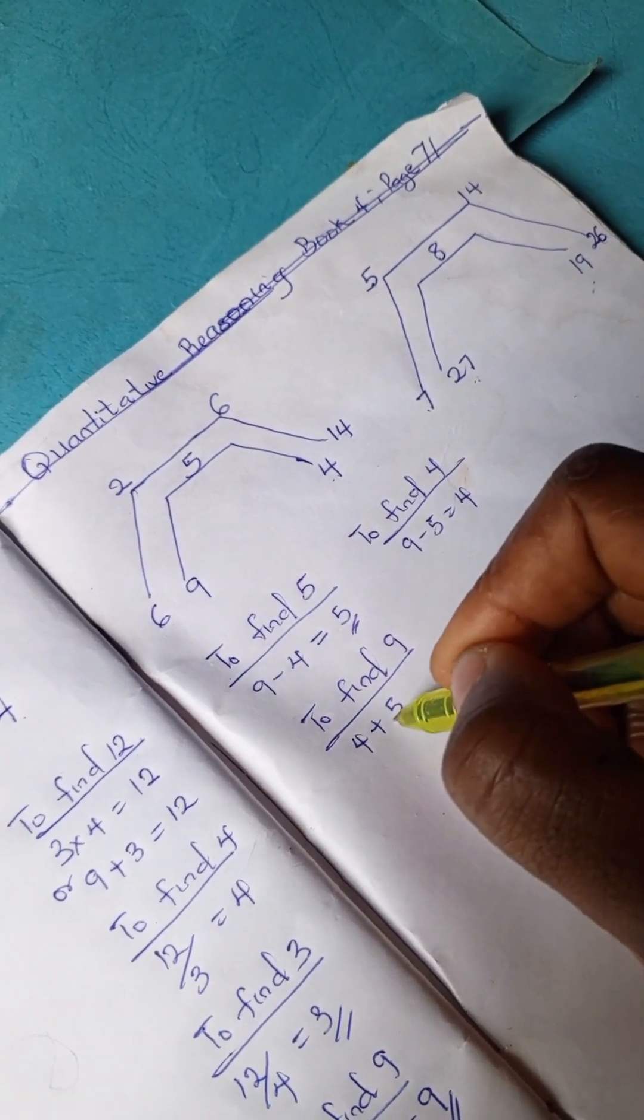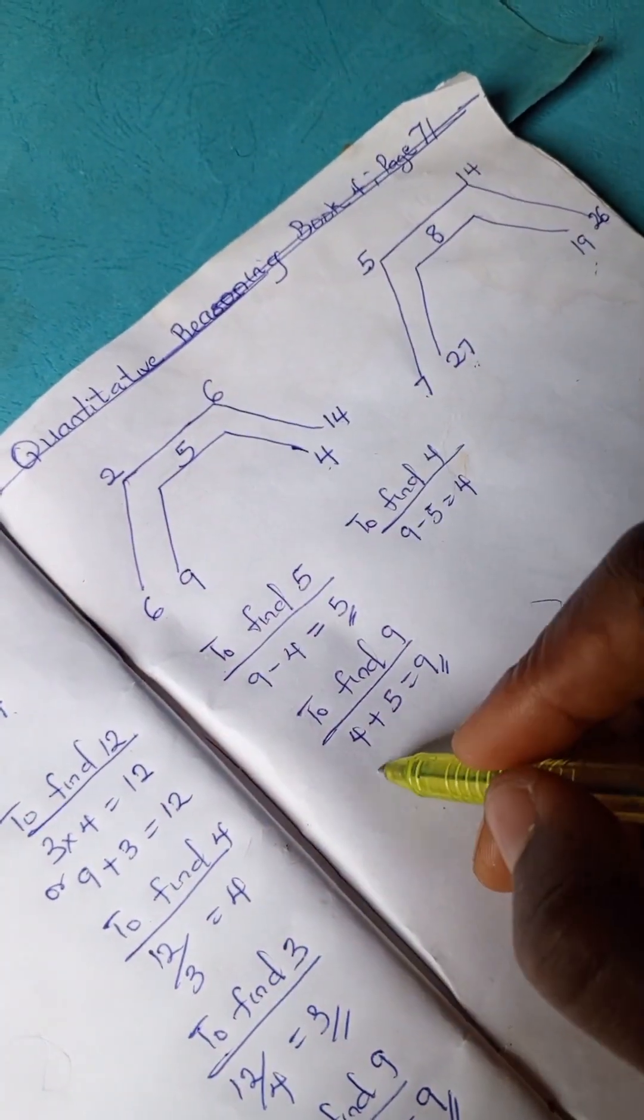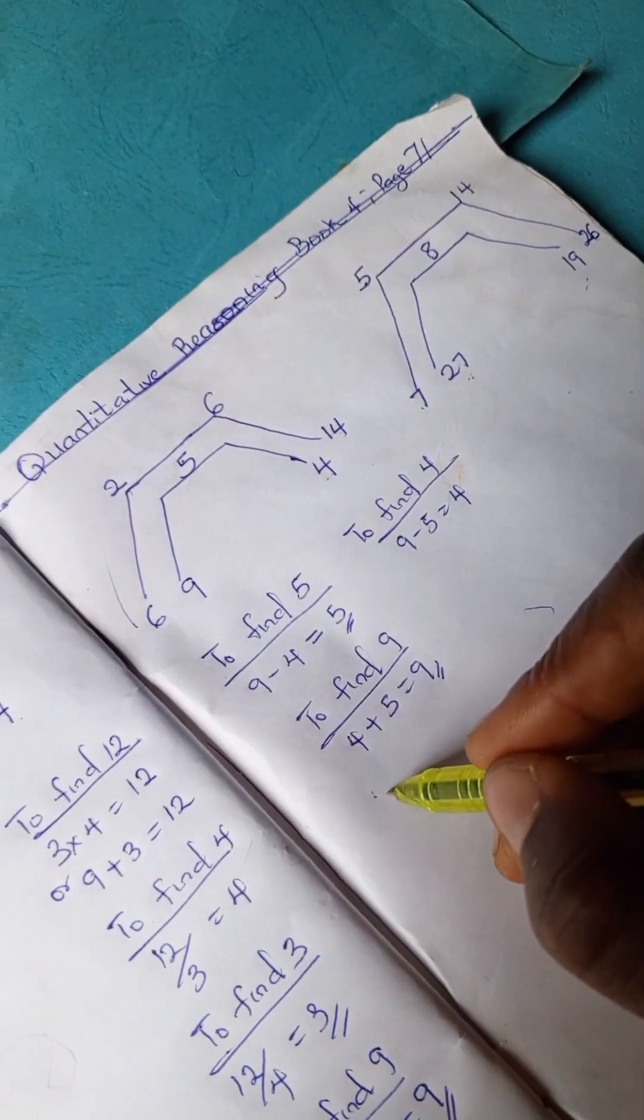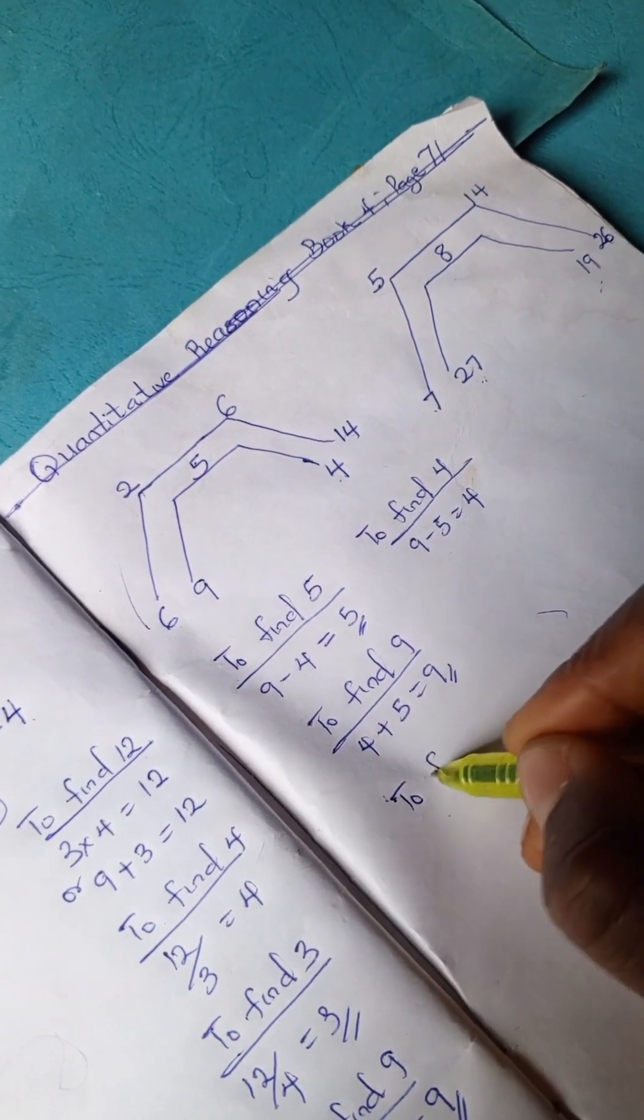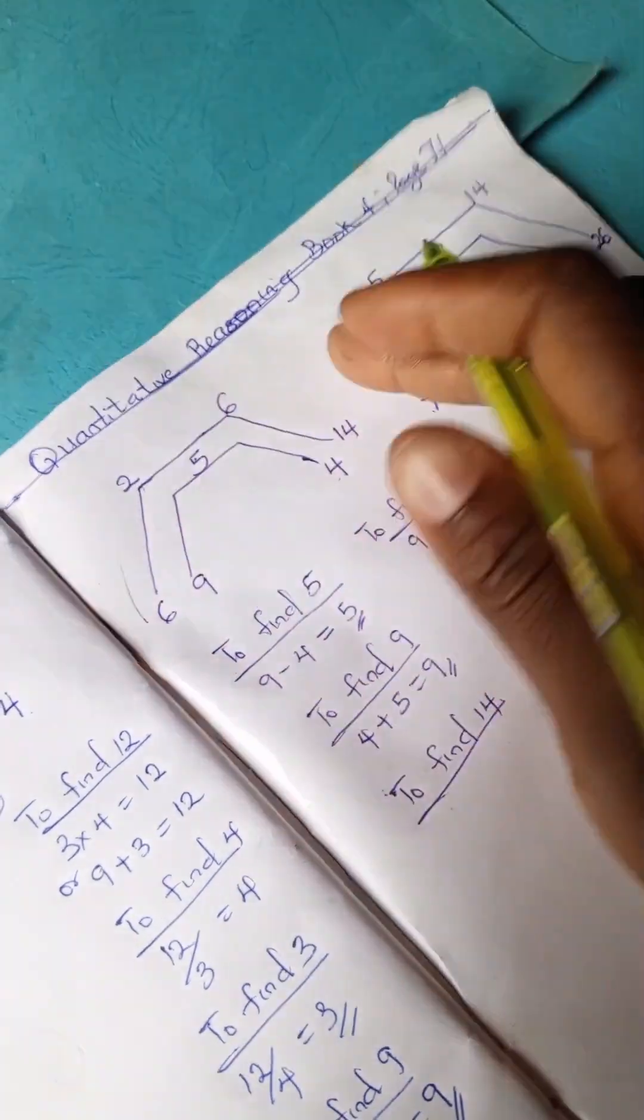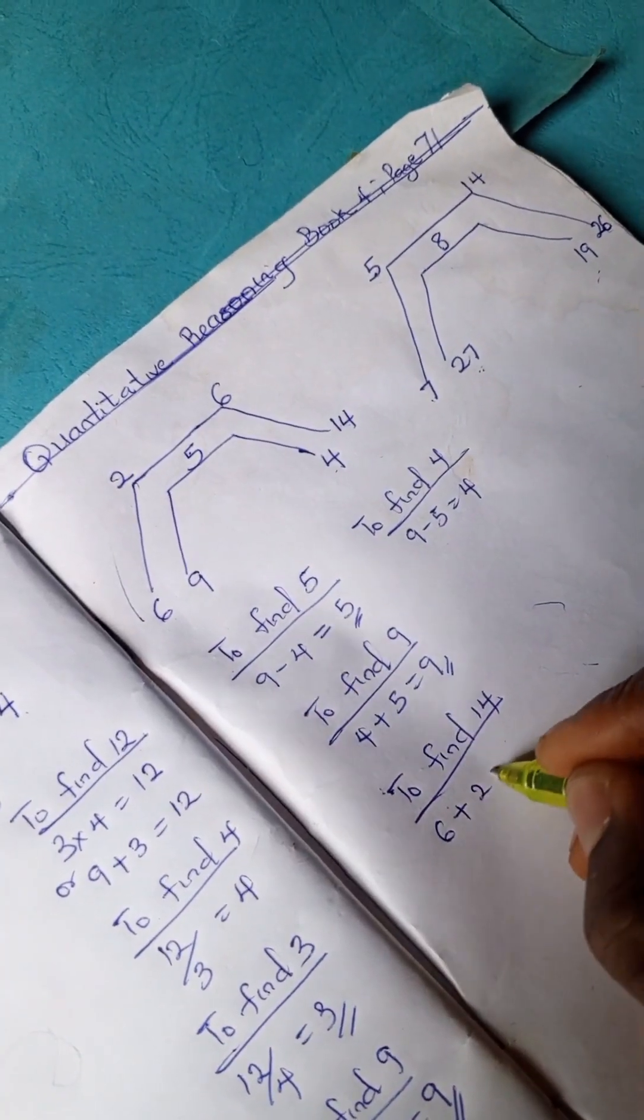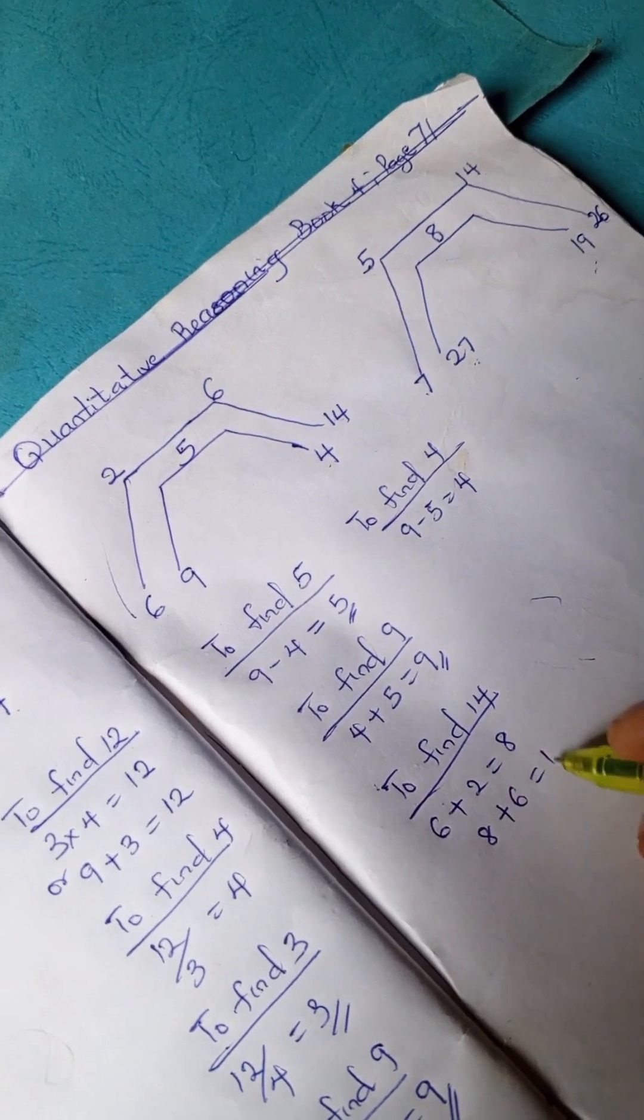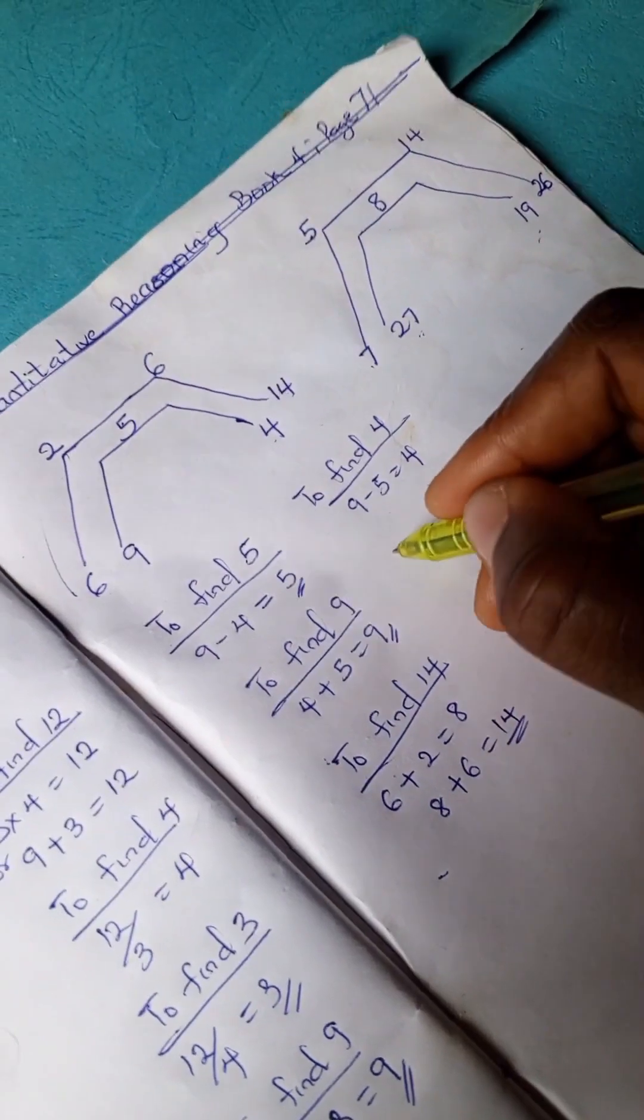Let's look at this one. To find 14, remember these parts are equivalent. We would say 6 plus 2 is 8, 8 plus 6 is 14. So to find 14...